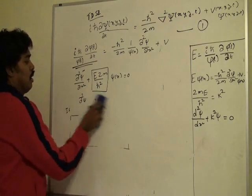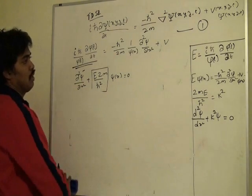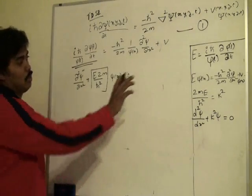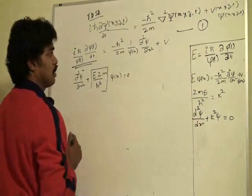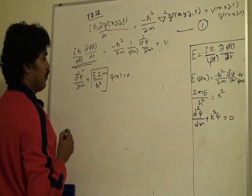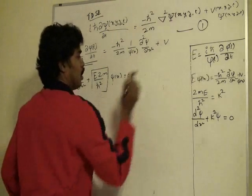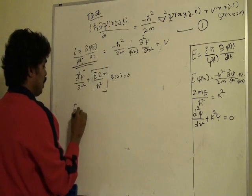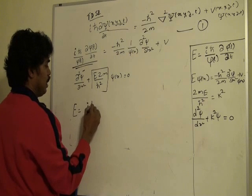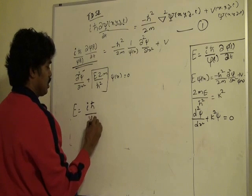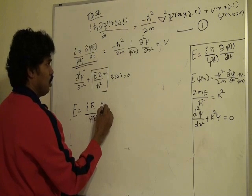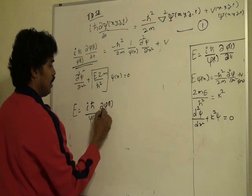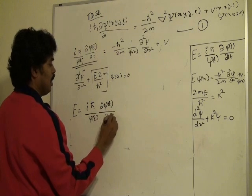So I will summarize what I derived here. One more thing, maybe we can also replace and find the φ(t) by taking this equation. E is equal to i h bar over φ(t) times dφ(t)/dt. See again,